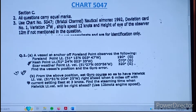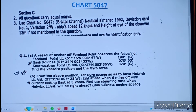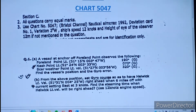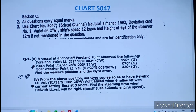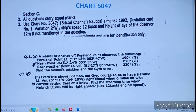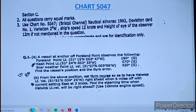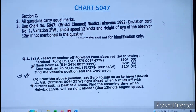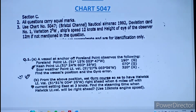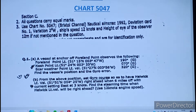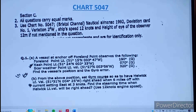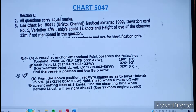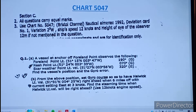The first question: a vessel at anchor off Foreland Point observed the following — Foreland Point position given 190°, Nest Point Light position given 007°, Scar Weather Light position given 320°. Find the vessel position and the gyro error.